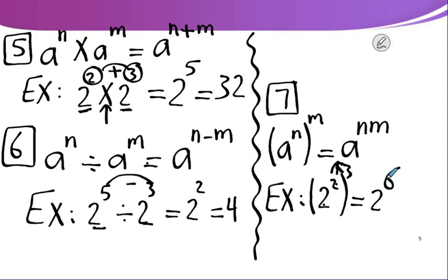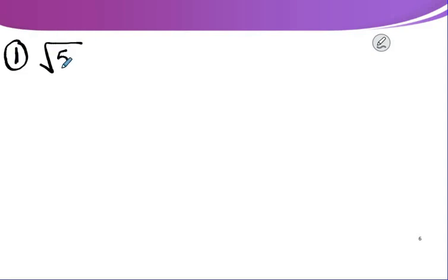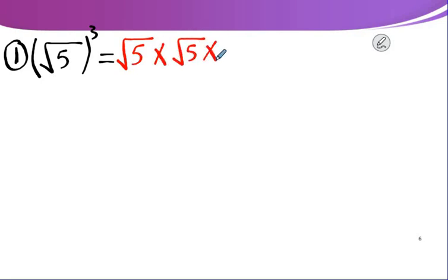Now let's see how to use them in solving different exercises. Find in the simplest form each of the following. Number 1: square root of 5 to the power 3. This means square root of 5 multiplied by itself three times: √5 × √5 × √5 equals 5√5.